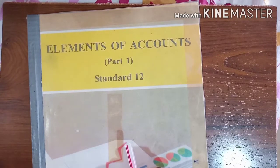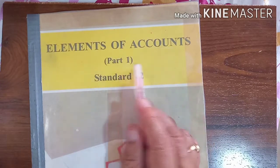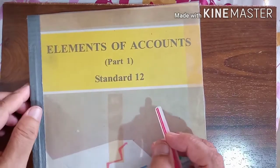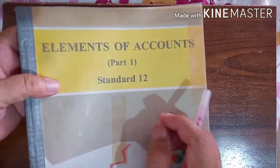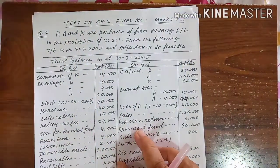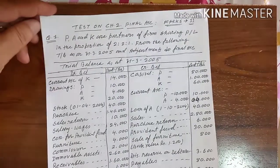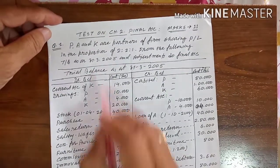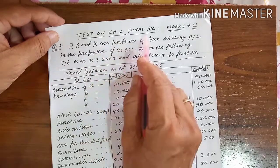Hello students, hope you all are well. Once again, the Elements of Accounts Part 1 of Standard 12. Till now we have completed two chapters, chapter 1 and chapter 2. Chapter 2 was the final account of a partnership firm, which I already completed. Now today I want to give you two questions, or the test paper, on the basis of chapter 2 of the final account.